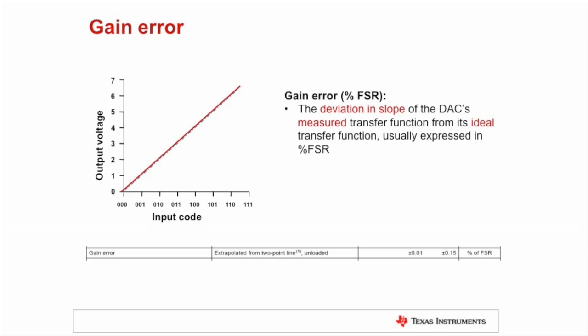The next specification to consider is Gain Error. If Offset Error is the B term in Y equals MX plus B, then Gain Error can be considered the M term. Gain Error describes the deviation from the ideal slope of the transfer function defined as 1LSB.